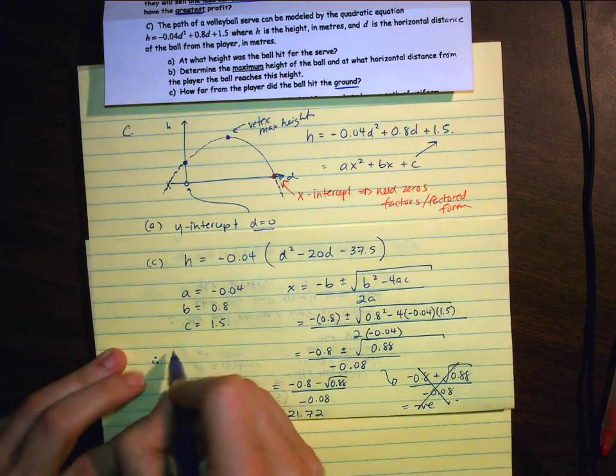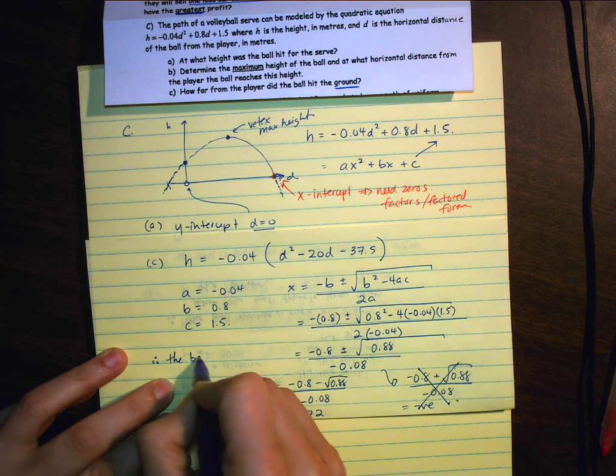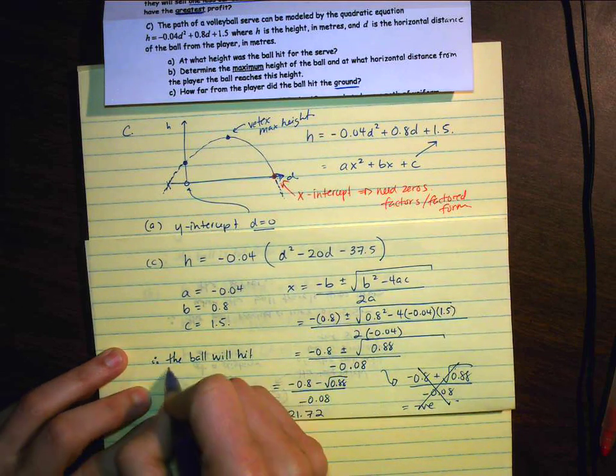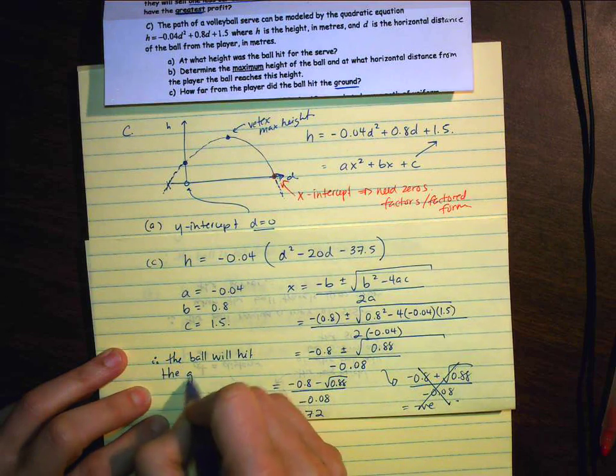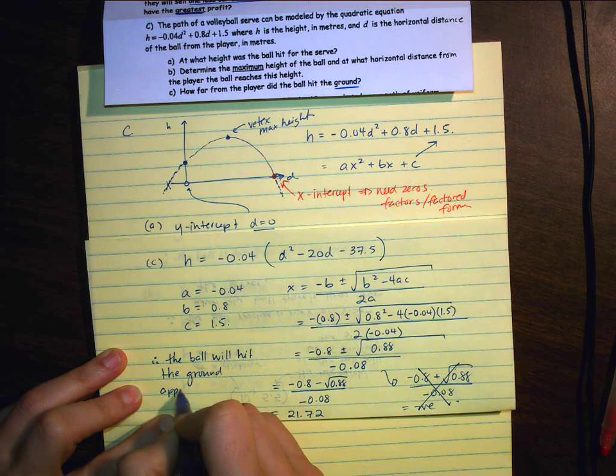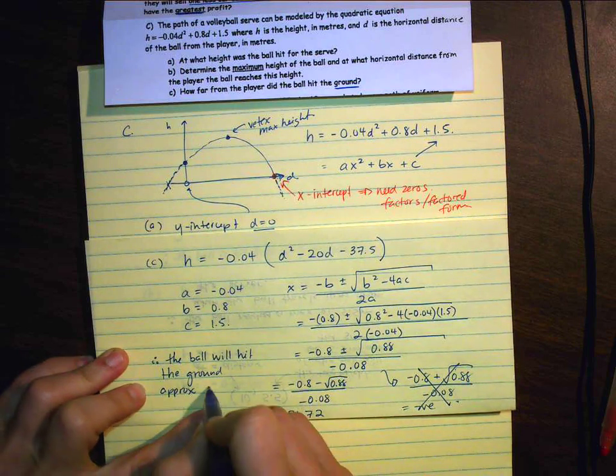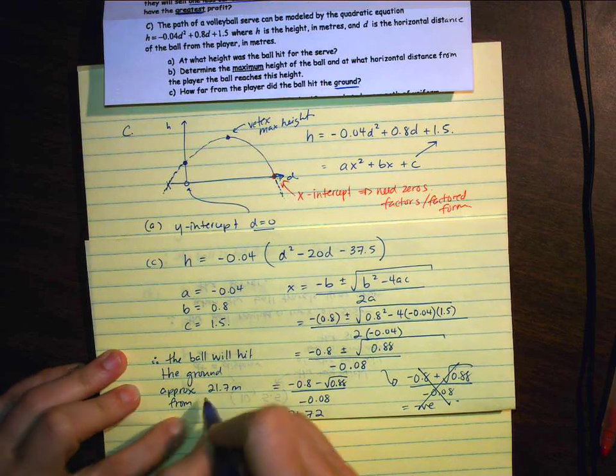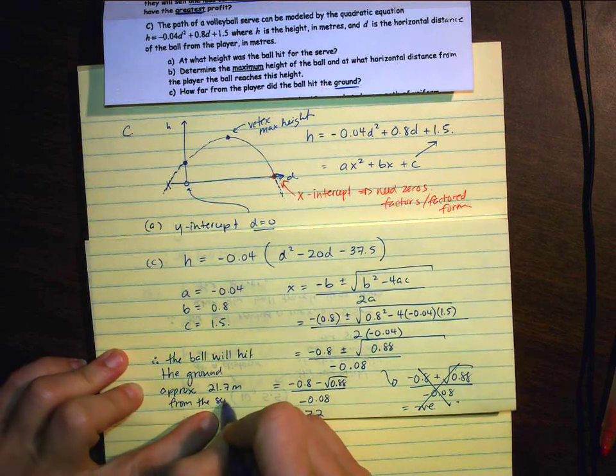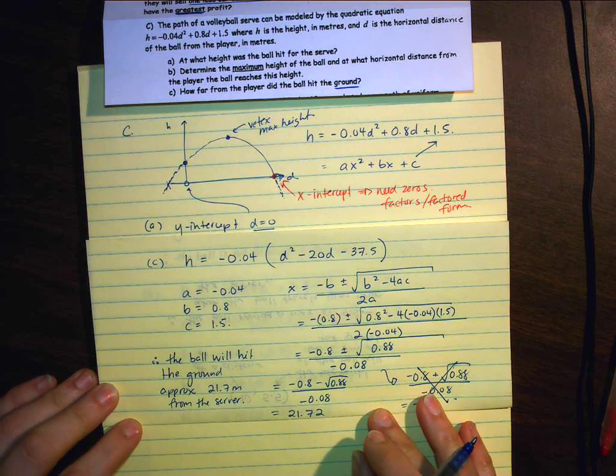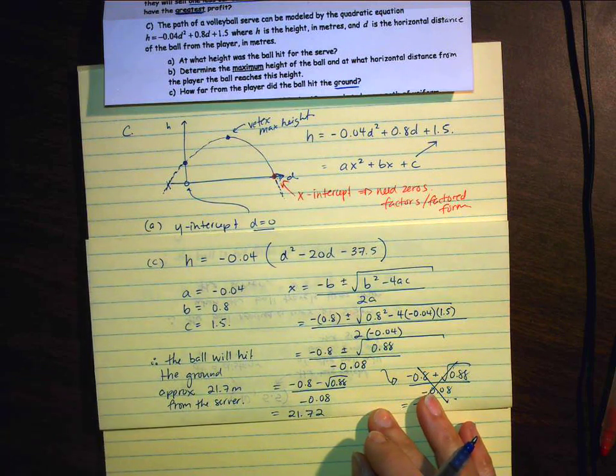Therefore, the ball will hit the ground approximately 21.7 meters from the server. Alright, so that is part C. Part C isn't a max-min question, so you have to, that's why sketches are important and have some idea of what's going on in the question.